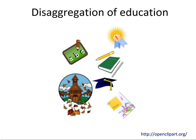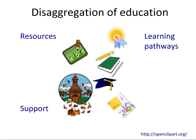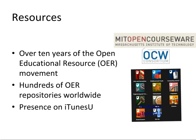I want to argue four things in this brief talk. That we're seeing a disaggregation of education as a result of new open practices. And increasingly, learners will choose to pay for components of courses rather than the whole university experience. They may pay for high quality kite-marked resources, for guided learning pathways, for some form of support, or some form of accreditation. I'm going to look at each of these in turn and pick up some key aspects.